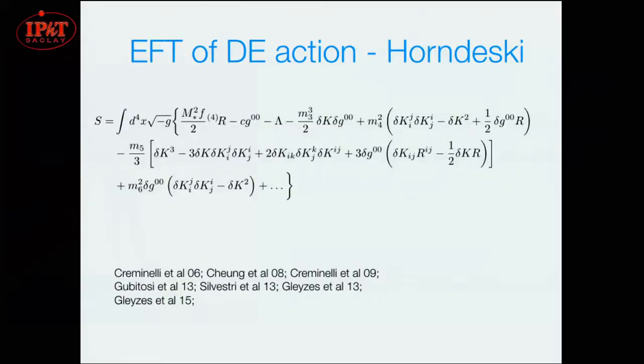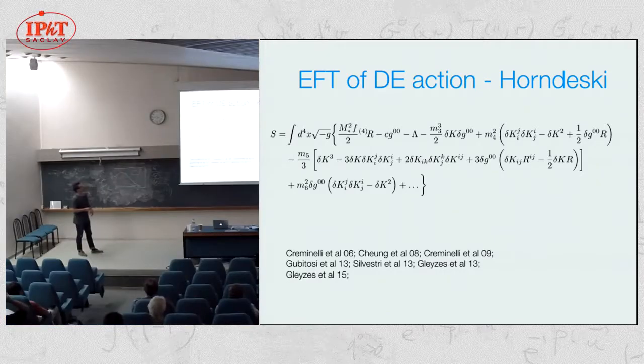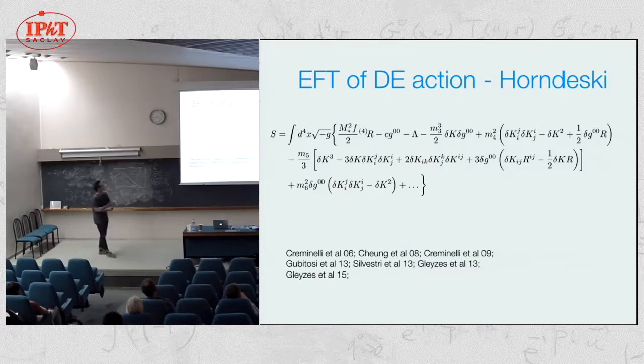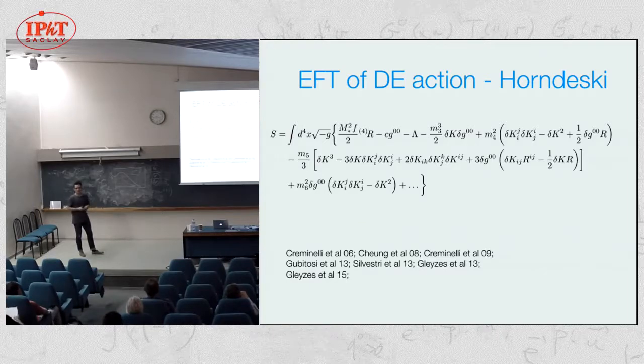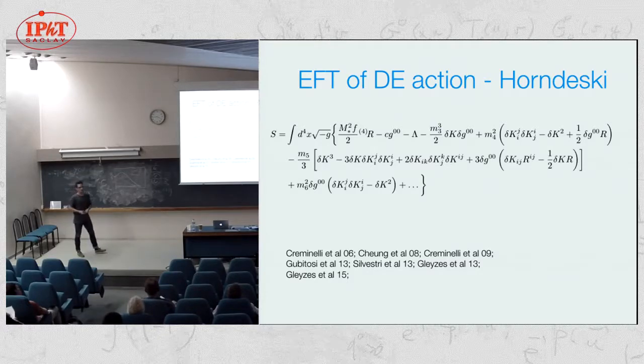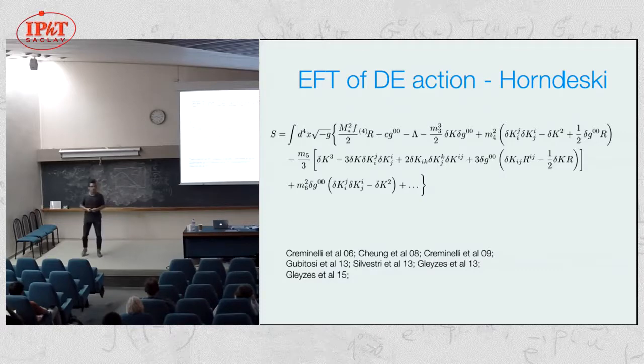Now I'm going to move on to EFT of dark energy. The idea is to use this framework to tell us something about the EFT of dark energy. This is the action that tells us about this extra degree of freedom, the Stuckelberg field. Since we're interested in computing nonlinear corrections to the power spectrum, we need the higher order version. That involves going up to quartic order in the action. You write out all the terms that break the time diffs. This particular form is related to the Horndeski form.